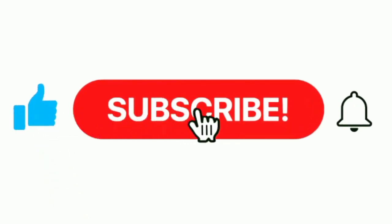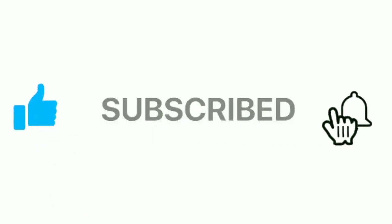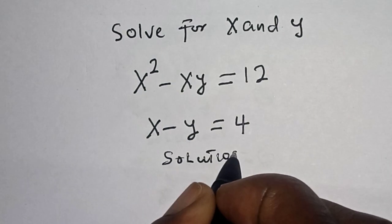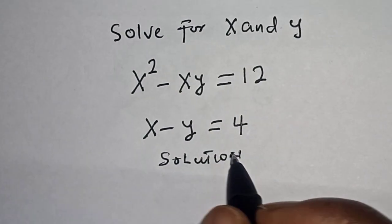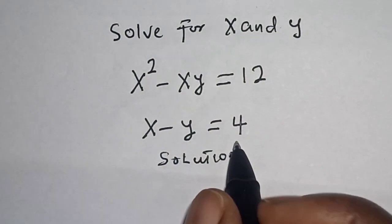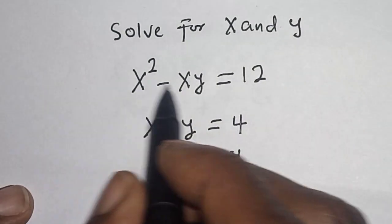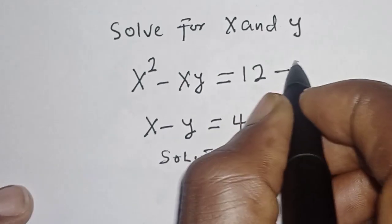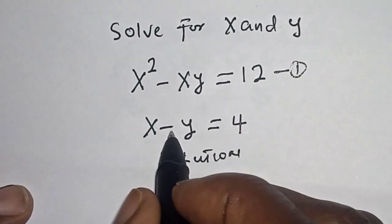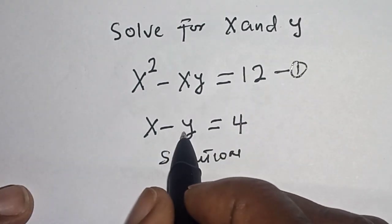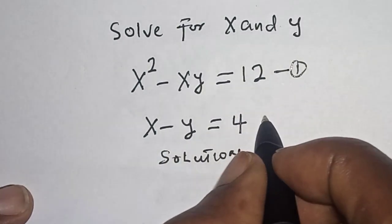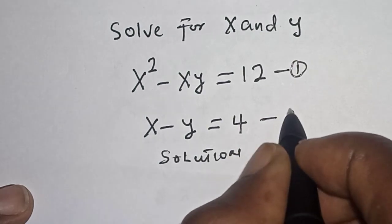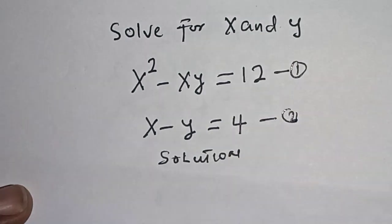Solution. We have x squared minus x y is equal to 12 — let's call this equation 1. Then x minus y is equal to 4 — let's call this equation 2.